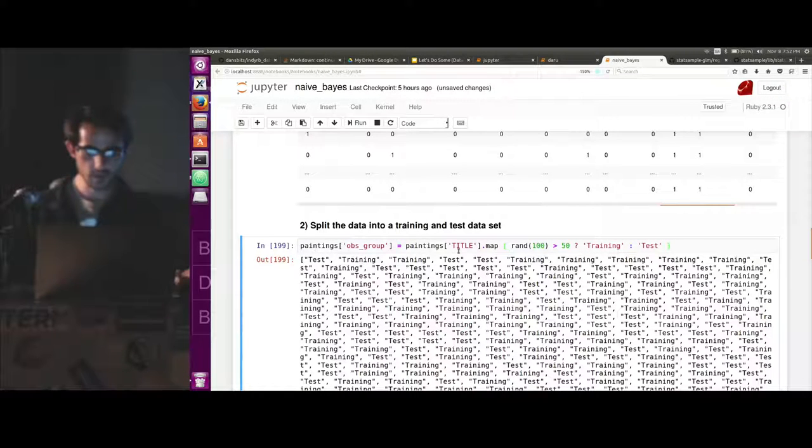So we add a new column called observation group that just randomly assigns for each one. It'll either be in the training set or the test set.